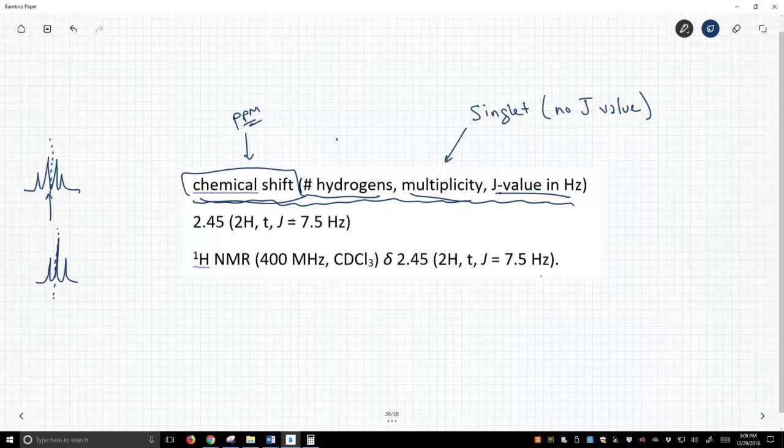The number of hydrogens is simply the integration. The multiplicity is its multiplicity. Is it a singlet? Is it a doublet? Of course, this can include more complex things. Multiplicity is typically one letter.